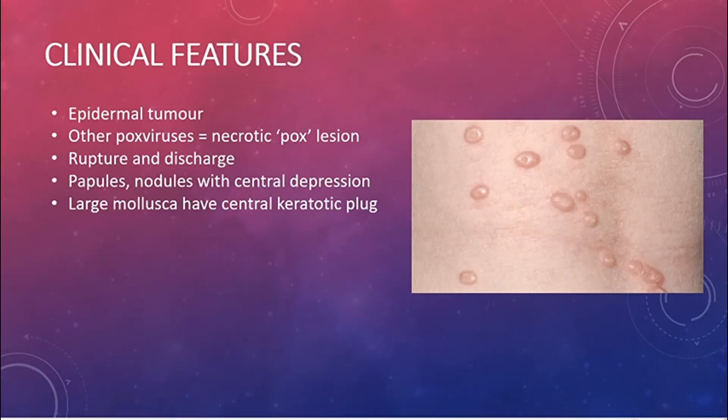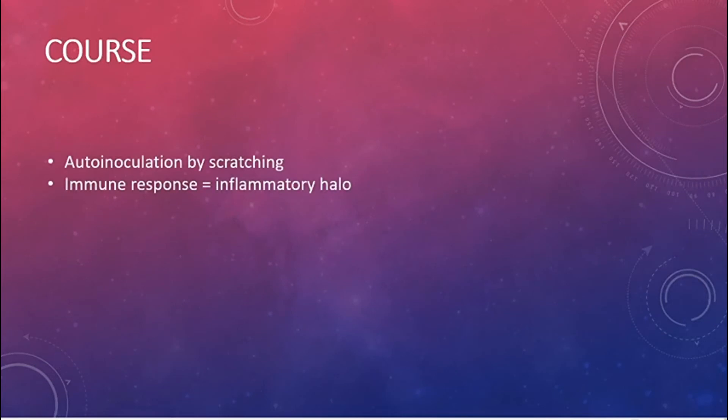If you gently press it, it extrudes the central plug. It can either be scattered or be a confluent mosaic plaque. Auto-inoculation is also possible by scratching or touching the lesion. Immune response leads to an inflammatory halo around the mollusca.